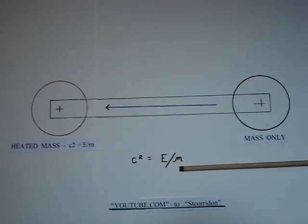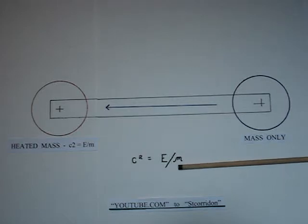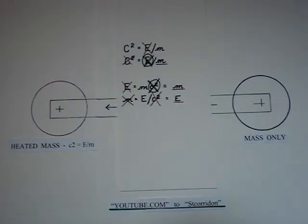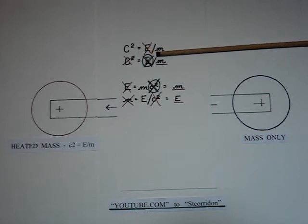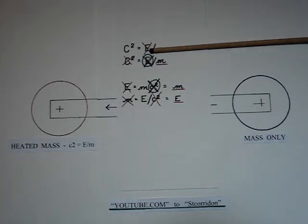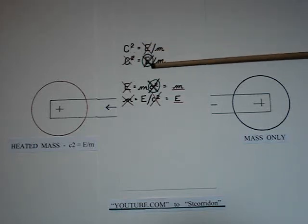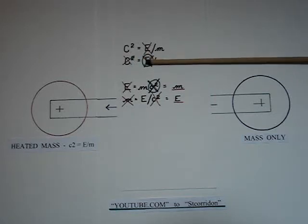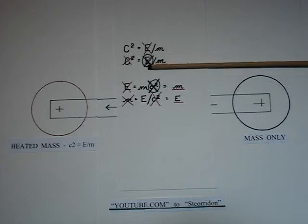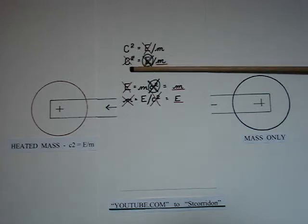C2 being equal to E divided by M is the basis of this engine. Notice that if I get rid of the value of energy, the C2 would vanish. In the equation C2 = E/M, I got rid of the energy. If there is no energy in relation to the mass, there is no C2 — it disappears along with the energy.